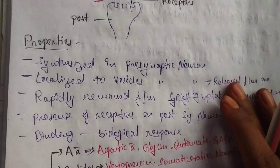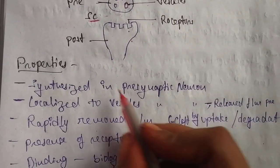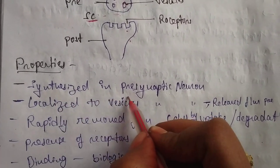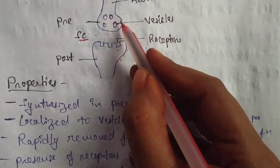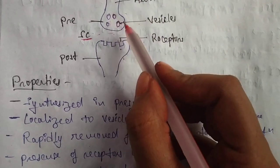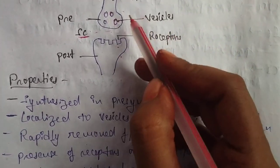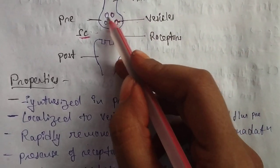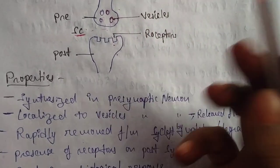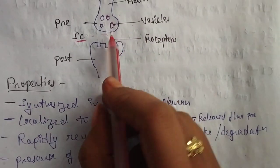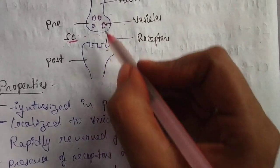What are the properties of neurotransmitters? Neurotransmitters are synthesized in the pre-synaptic neuron, and localized into the synaptic vesicles.